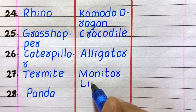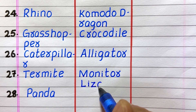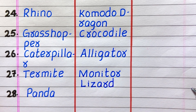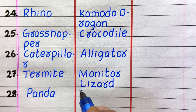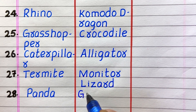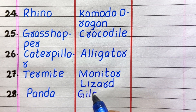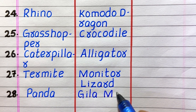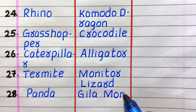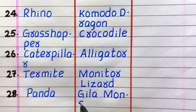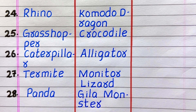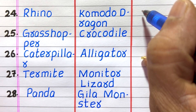Twenty-fourth example of a carnivore is komodo dragon, twenty-fifth crocodile, twenty-sixth alligator, twenty-seventh monitor lizard, twenty-eighth gila monster.